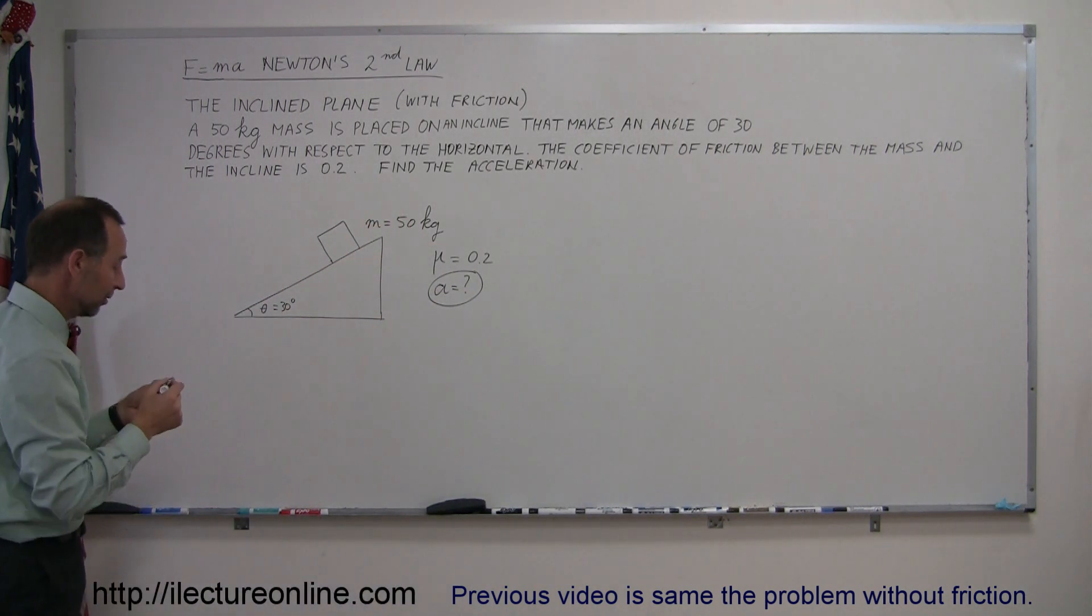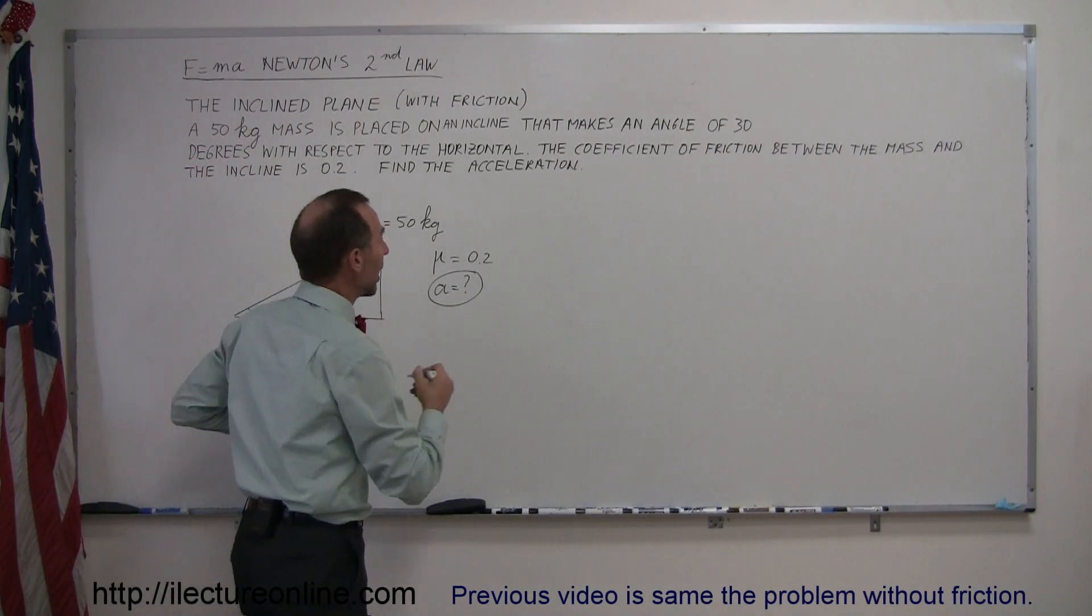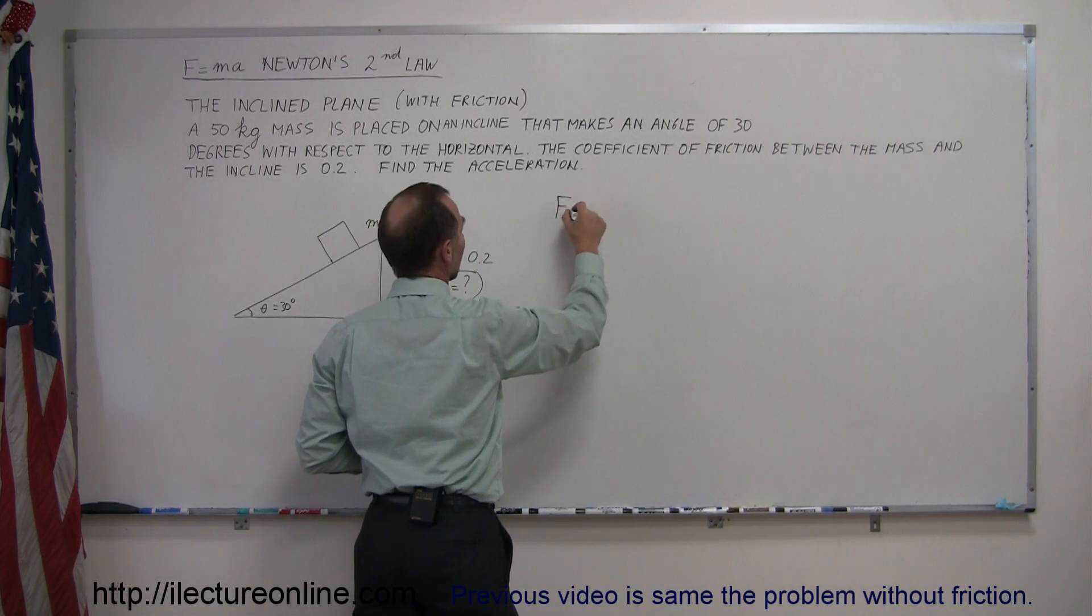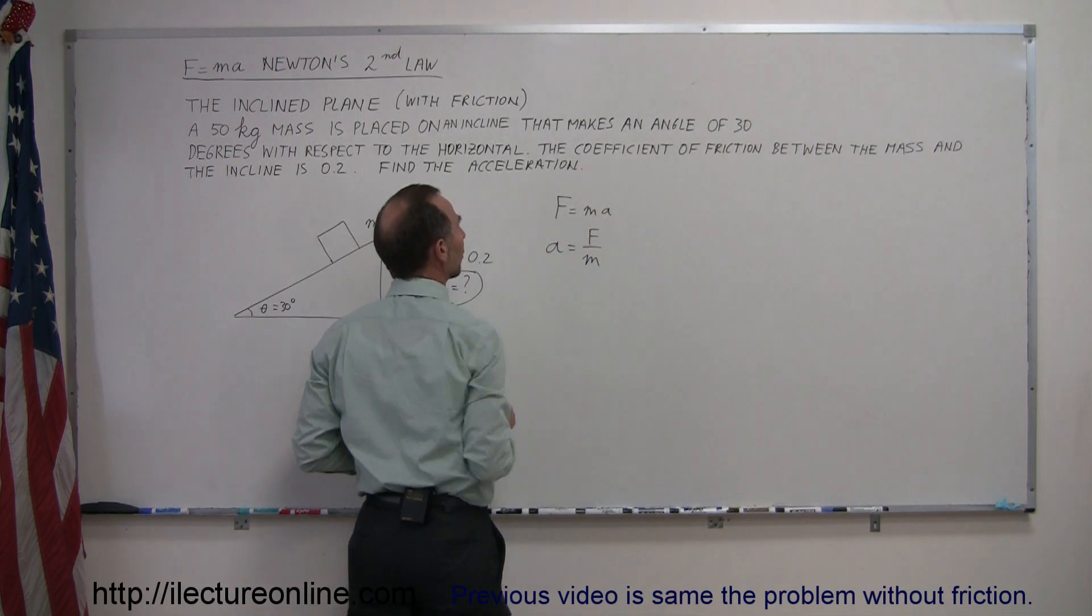All right, again, to solve a problem like this, we realize we're going to use Newton's second law, F equals ma. Which means that a is equal to F divided by m, if we divide both sides of the equation by m.